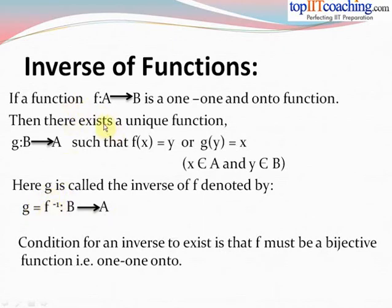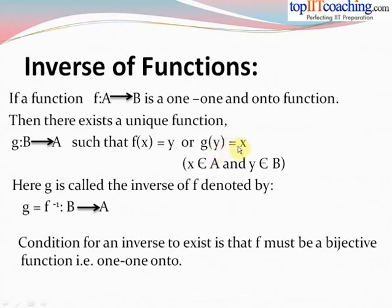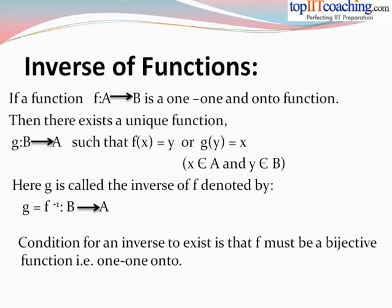Once again, if a function f from A to B is a one-one and onto function, then there is a function g from B to A such that f(x) = y, or g(y) = x, meaning x can be expressed in terms of y. So g = f inverse from B to A. The very important condition to note is that for an inverse function to exist, f must be a bijective function — that is, a function which is one-one and onto at the same time.